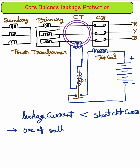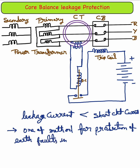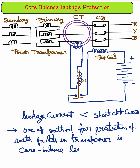One of the methods for earth fault protection of transformers is core balance leakage protection. As you can see in the figure, the system consists of three primary conductors.